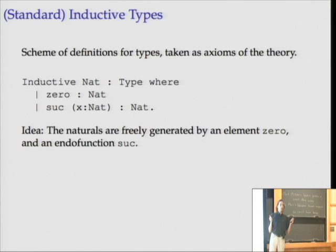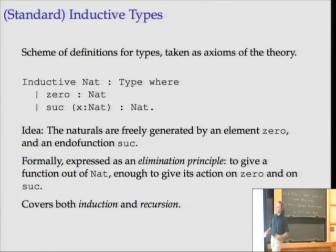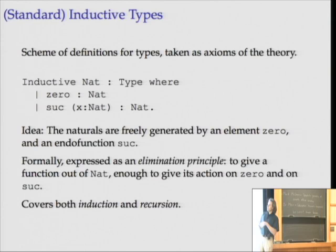One can specify the natural numbers by saying: they're a type, zero is an element of the natural numbers, and the successor of any natural number is again a natural number. Those are certainly true, and intuitively we want the idea that the naturals are freely generated by those. We all know how to make that idea precise — induction or recursion — which can be summed up by an elimination principle, the type-theoretic jargon for it.